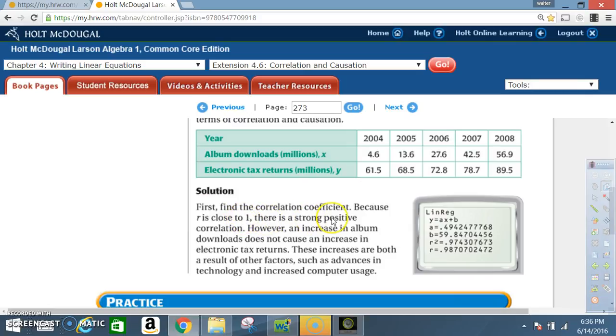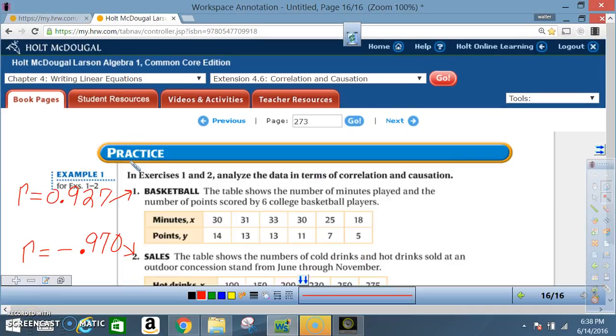there is a strong positive correlation. However, an increase in album downloads does not cause an increase in electronic tax returns. These increases are both a result of other factors such as advances in technology and increased computer usage.